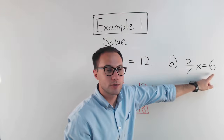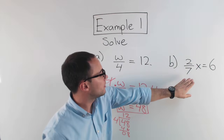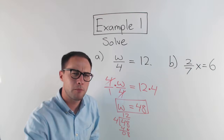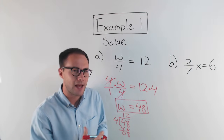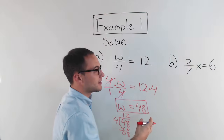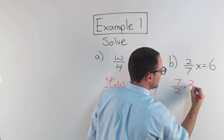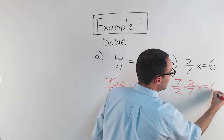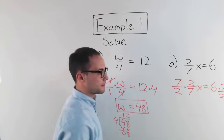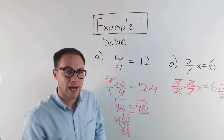Let's try the next one. Now we have 2/7 x equals 6. This 2/7 is right next to my variable x, which means they're being multiplied by each other. The opposite of multiplication is division. So to get rid of this 2/7, I can divide by 2/7. Dividing by a fraction is the same exact thing as multiplying by its reciprocal. So I'm going to multiply by 7/2. 7/2 times 2/7 x — the 2's cancel out, the 7's cancel out, and I'm left with 1 times x, which is just x.